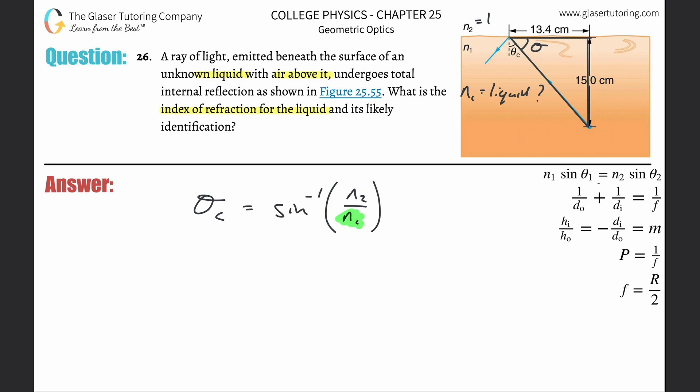This is the opposite side and this is the adjacent side, so I must be using tangent. Tangent of that angle equals the opposite over the adjacent side. Solving for the angle, I'd take the inverse tan of both sides. That cancels the tangent on the left, and it's simply inverse tan of the opposite side over the adjacent side - inverse tan of 15 over 13.4.